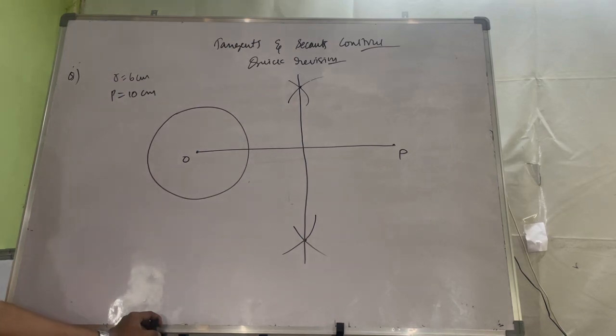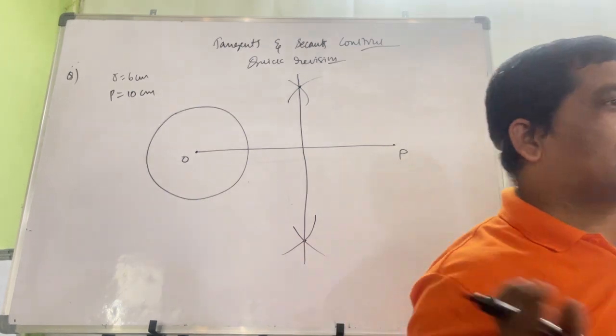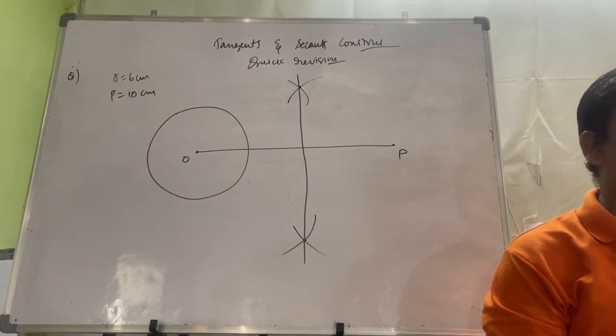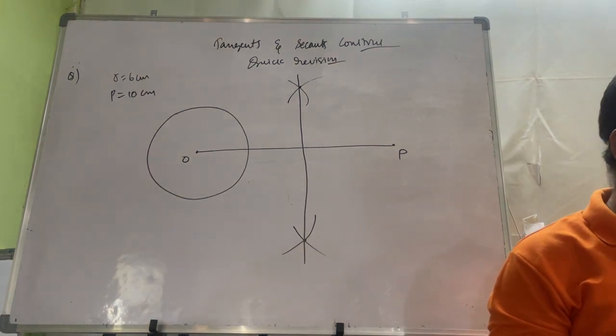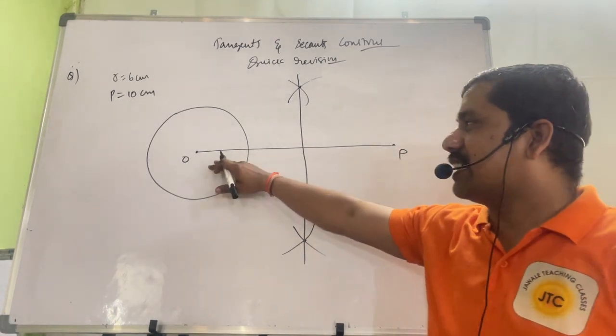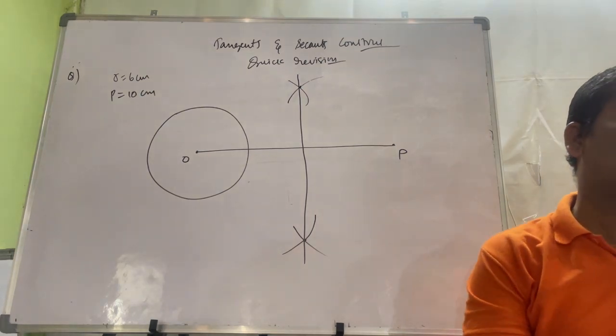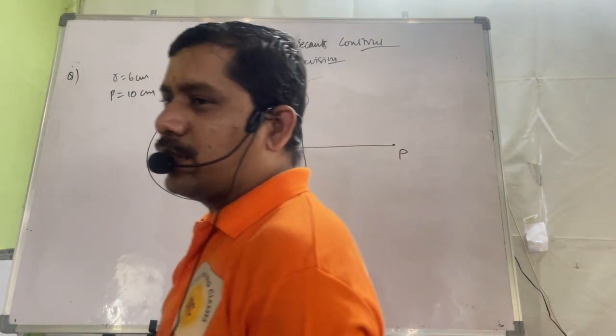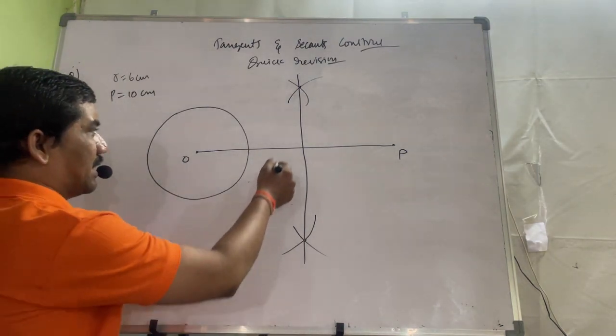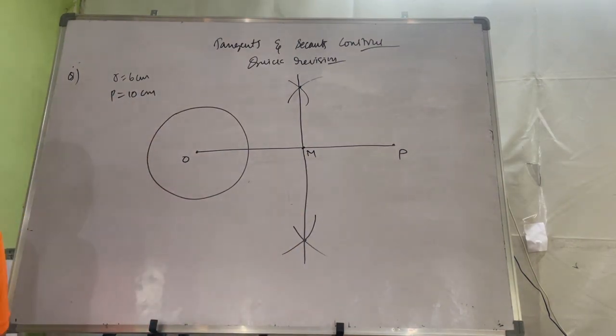Perpendicular bisector will divide the given line into two equal parts. You could directly mark 5 cm, but that method is not prescribed. If you do like that, you lose marks. That is why you have to draw perpendicular bisector. So perpendicular bisector is cutting here, you give the name M.